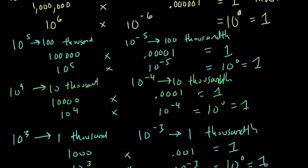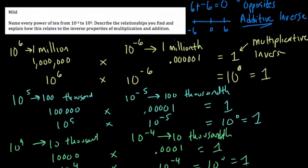Just a couple things. We have the additive and multiplicative inverses. But also the names themselves - often we say 10 to the negative 6 is 1 millionth. If you have 1 millionth and you're trying to think what that would be as a decimal, think of 10 to the 6th. Million is 10 to the 6th.